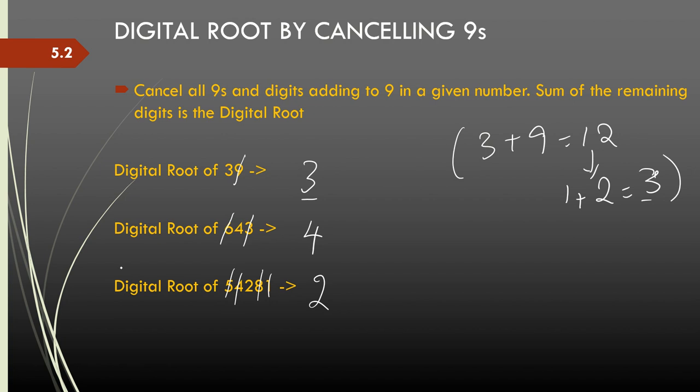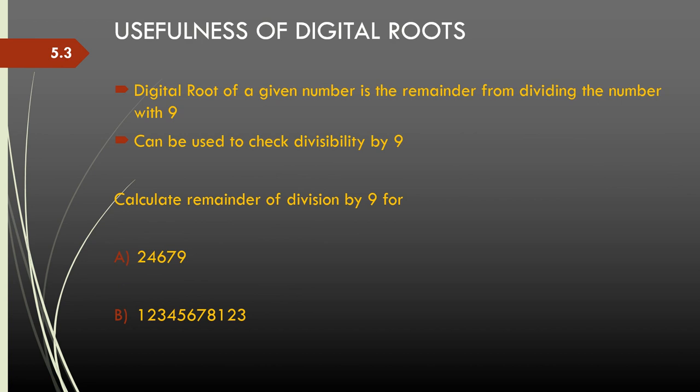Now digital roots have a couple of very useful properties. One is that the digital root is always the remainder of dividing the given number by 9. Hence we can use it either to find the remainder quickly or to check divisibility by 9.